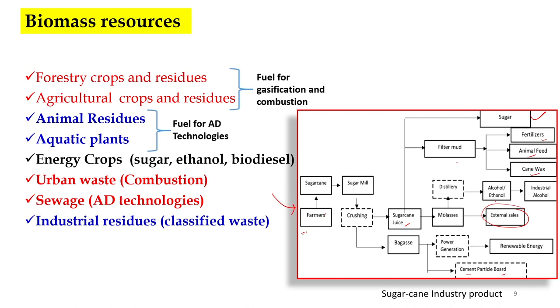From sugarcane alone, you can have multiple products: sugar, fertilizer, animal feed, cane works, alcohol, and energy generation. That is an example of utilizing one kind of biomass for different applications.